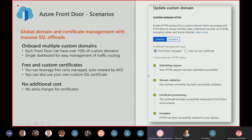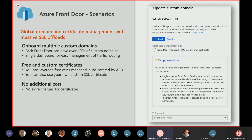Another key benefit is global domain and certificate management. You can onboard hundreds of custom domains onto Front Door at no charge. You can bring your own certificates, or request a certificate through us — we have a partnership with DigiCert. We request the certificate on your behalf, DigiCert issues it, we store it in our Azure Key Vault instance, and we manage and auto-rotate it. All of this is free. This one simple mechanism for managing all domains and certificates is driving a lot of customer interest.